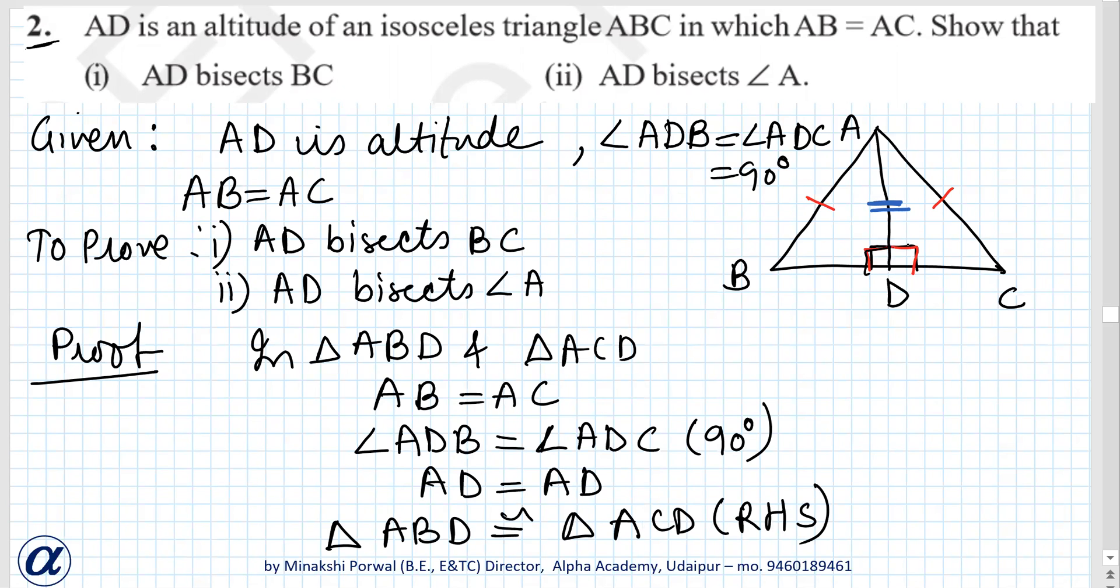Because it is right angle, then hypotenuse and one of the sides. So by CPCT, we can write BD equals CD. This is what AD bisects BC means.